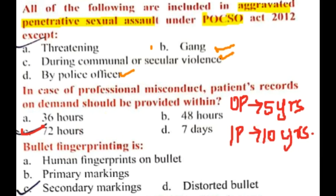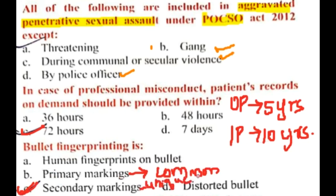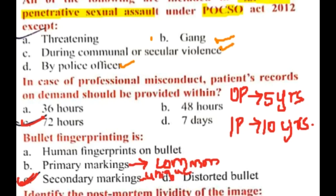Next, bullet fingerprinting. Bullet fingerprinting is based on secondary markings. Primary markings are common to bullets manufactured by a particular manufacturer, but secondary markings are unique markings present uniquely for each bullet. These secondary markings are important in bullet fingerprinting.